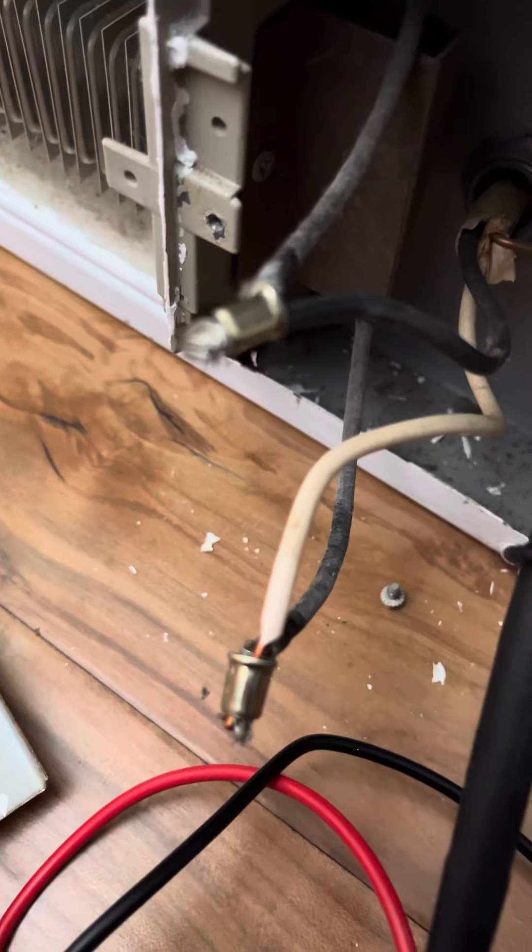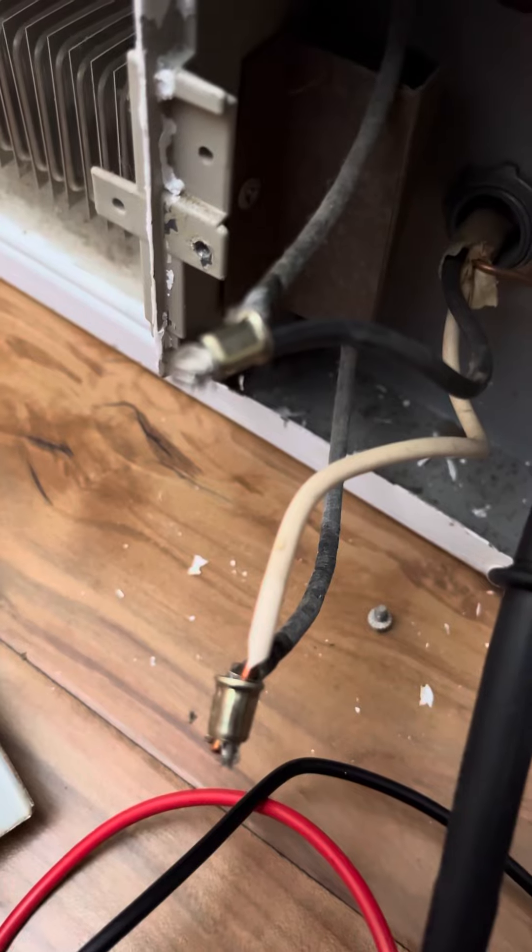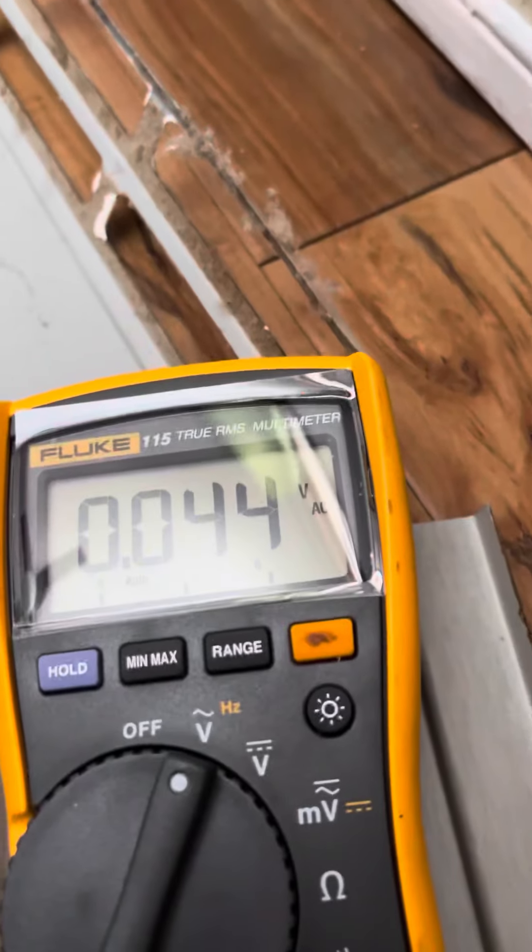If this was a 240 volt system circuit, each of those wires should be 120 volts apiece. So I'm getting my voltmeter.